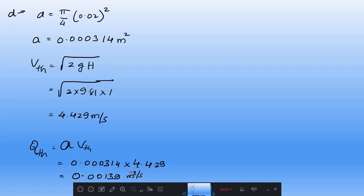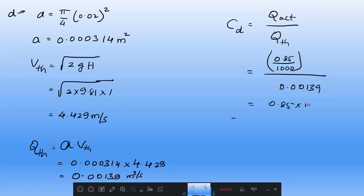Q theoretical equals 0.00139 meter cube per second. Now you got Q theoretical, but they are asking us to calculate Cd. Cd equals Q actual divided by Q theoretical. Q actual is 0.85 divided by 1000. Substitute here, then divided by Q theoretical is 0.00139. You can write 0.85 times 10 to the minus 3 divided by 0.00139. This Cd value you get is 0.61.